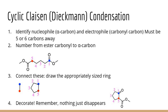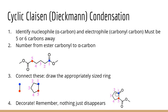Cyclic Claisen condensations — also known as Dieckmann condensations — work the same way as intramolecular aldol. Find a carbonyl and alpha carbon five or six carbons apart. Since we're doing a Claisen (ester) rather than aldol, we don't dehydrate: we form a single bond in the ring rather than a double bond. In this case, we get a five-membered ring, and we decorate carbon one with the remaining carbonyl group and carbon five with the ester group.